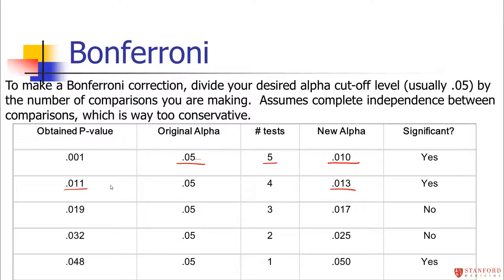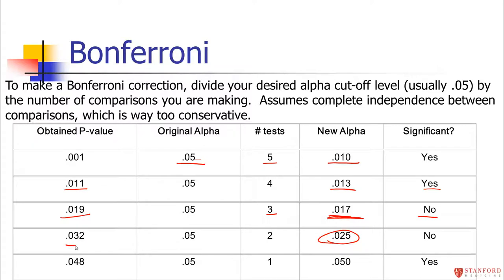If you have a p-value of 0.011 and ran four tests, with a cutoff of 0.013, that's still significant. For three tests, the Bonferroni correction gives a significance level of 0.017, so a p-value of 0.019 would no longer be significant — even though conventionally we'd call 0.019 significant. For two tests, you'd need p < 0.025. Bonferroni is easy to apply but highly conservative because it assumes all comparisons are completely independent, which is usually not the case.